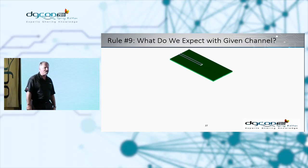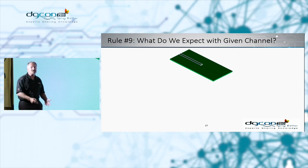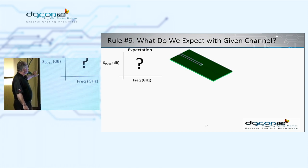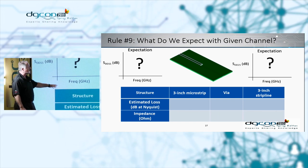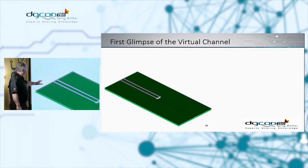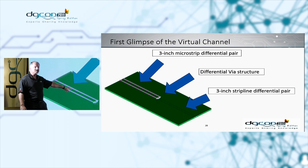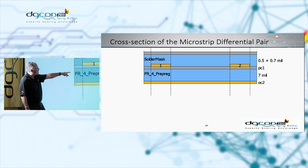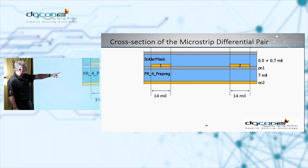Rule number nine: Eric Bogatin's rules of thumb. Let's expect what we should get before we run simulation or measurement. For this virtual channel — a three-inch microstrip, then a via, then a three-inch stripline — very simple, with FR4 material. The microstrip has a dielectric height of 7 mils and a trace width of 14 mils. When the width divided by the height is around two, you'll have about 50 ohms single-ended impedance.